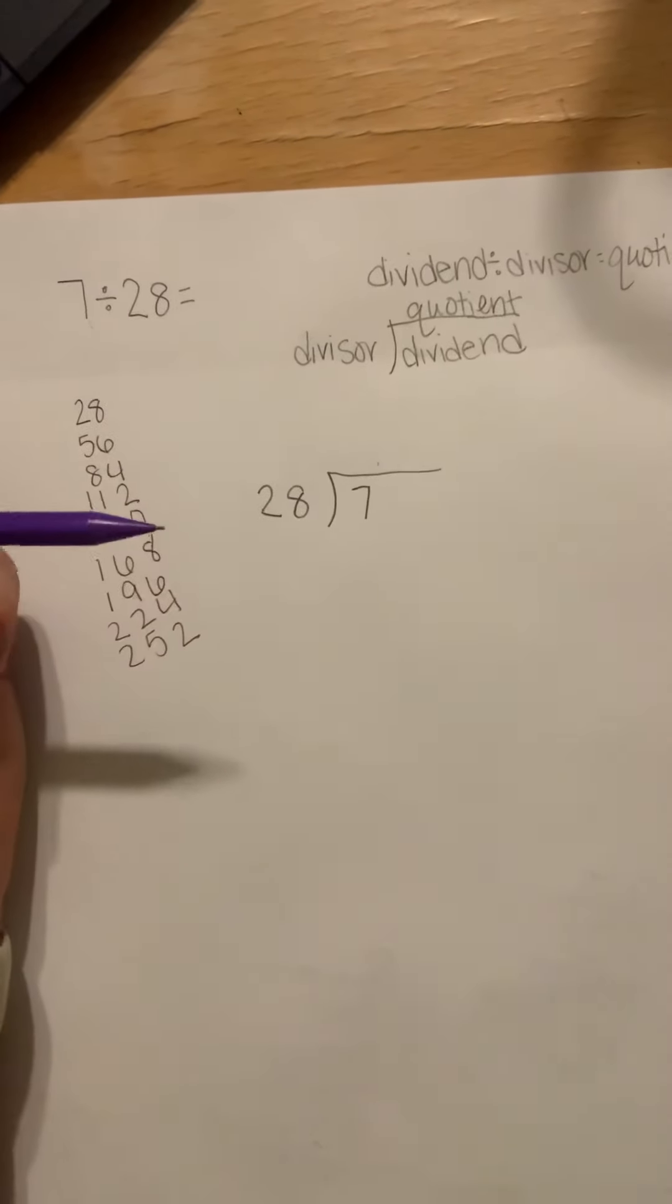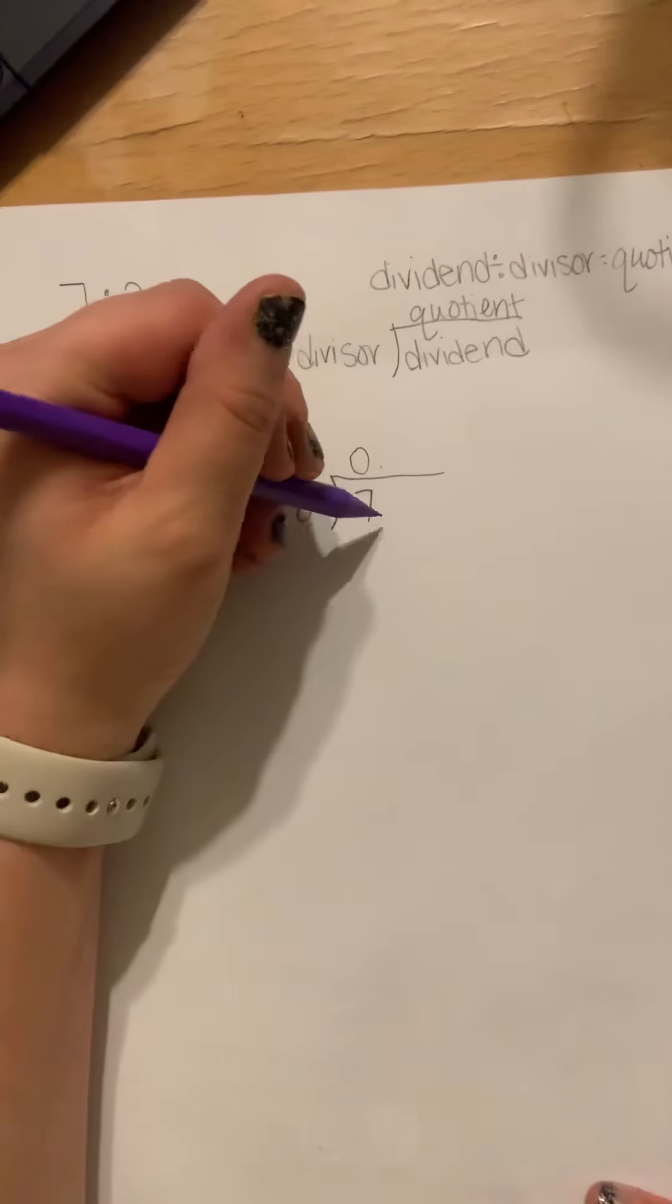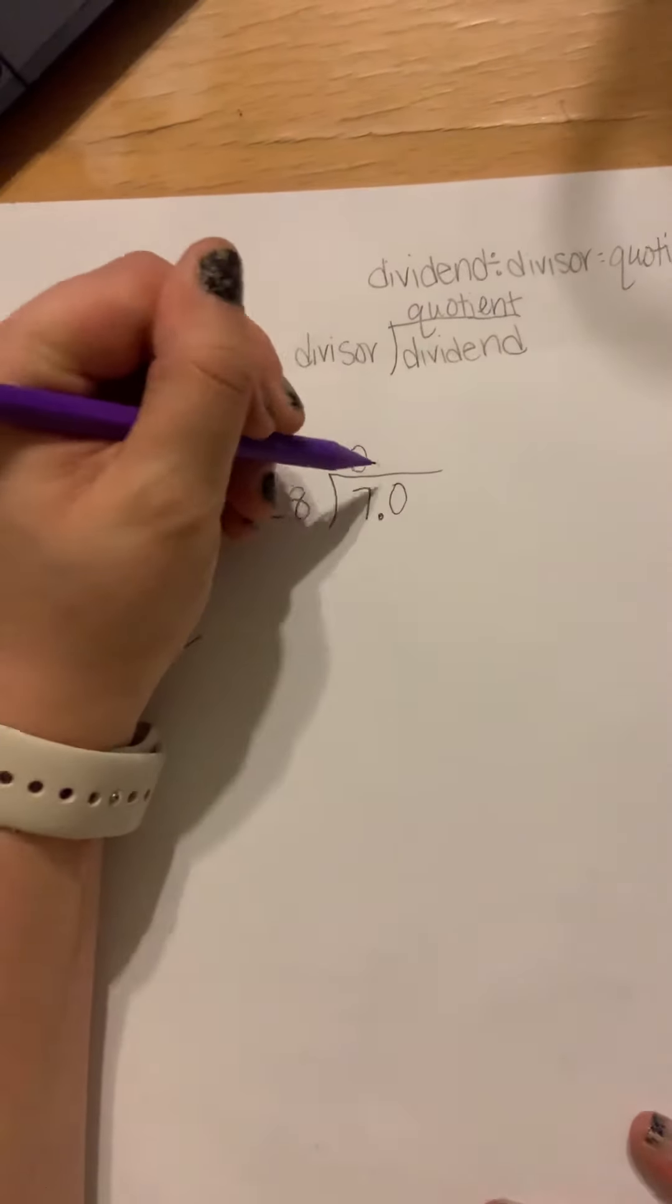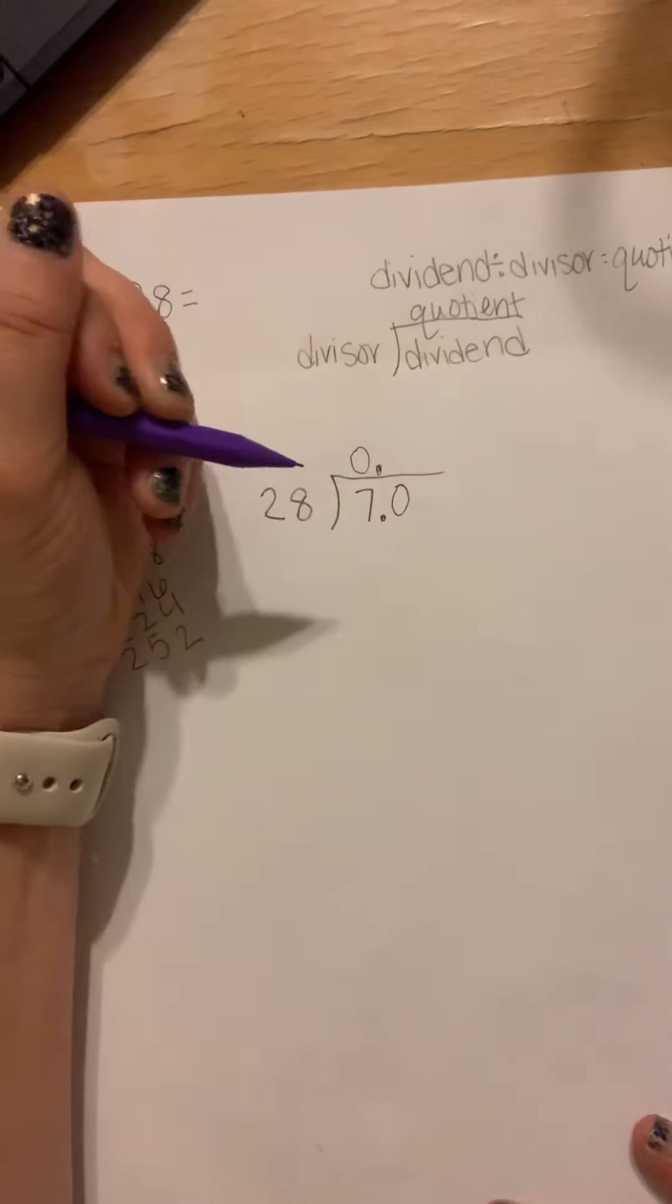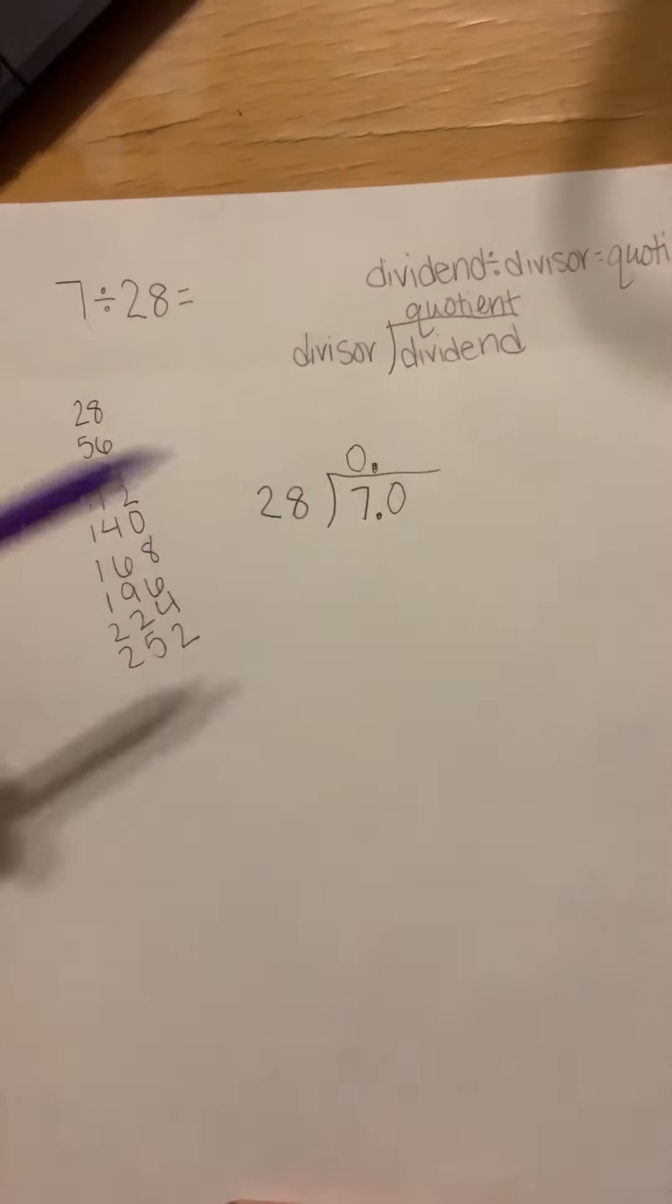Does 28 go into seven? It does not, but we need to know what seven is divided into 28 groups. So to be more precise, we're going to add a decimal and a zero. First things first, put that decimal straight up. And we're going to say, does 28 go into 70?